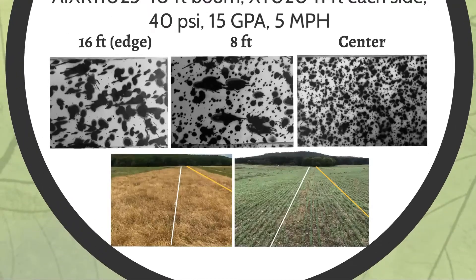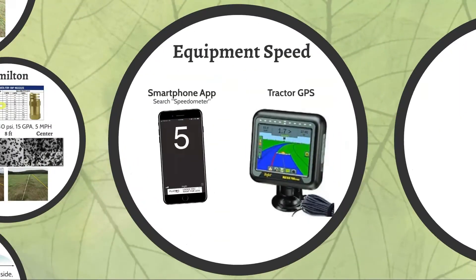Efficacy in the field confirmed the same thing — those plots look very similar to a boom, even though you didn't have to worry about dragging a boom through the field. So the takeaway on swath width: be very realistic about what you're actually spraying. If you need better coverage, consider adjusting that variable — make your boomless nozzle's effective swath narrower, or move to a different style system that allows better coverage than you currently have.